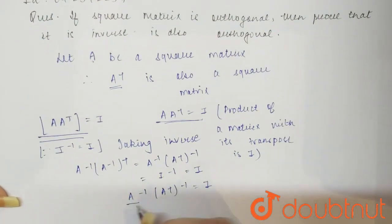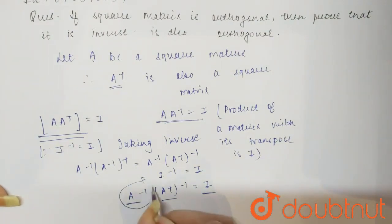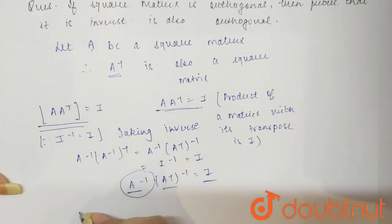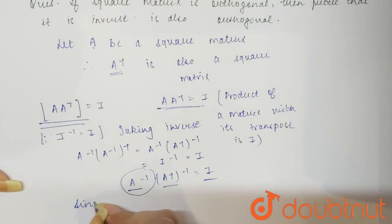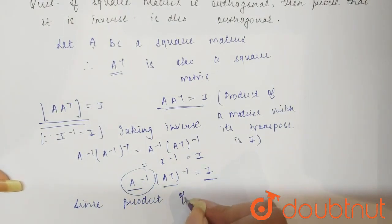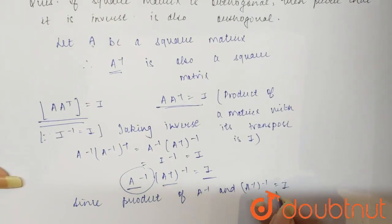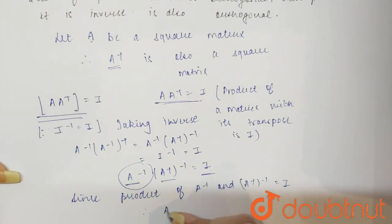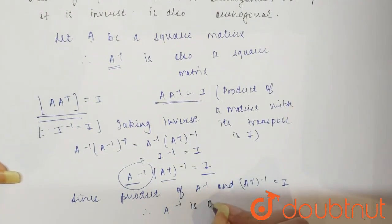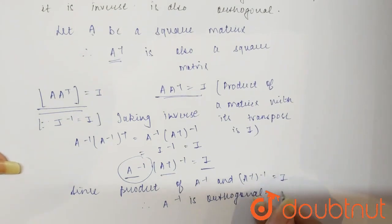Now since the product of A inverse and A T whole inverse equals I, therefore we can say that A inverse is orthogonal. Hence proved.